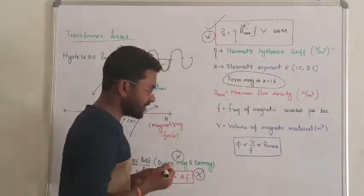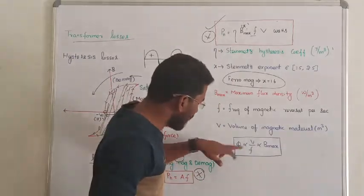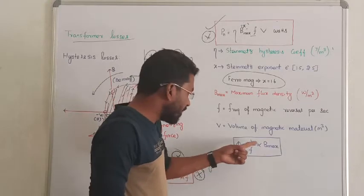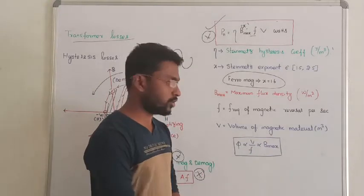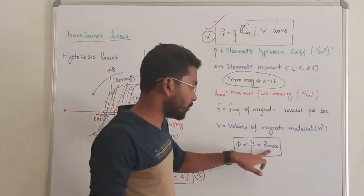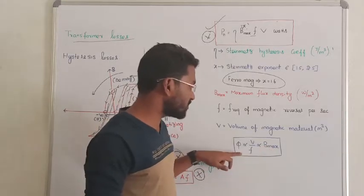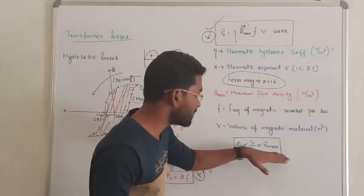Next, what do we know? Flux in the transformer is directly proportional to V by F. Flux and magnetic flux density are directly proportional to V by F.